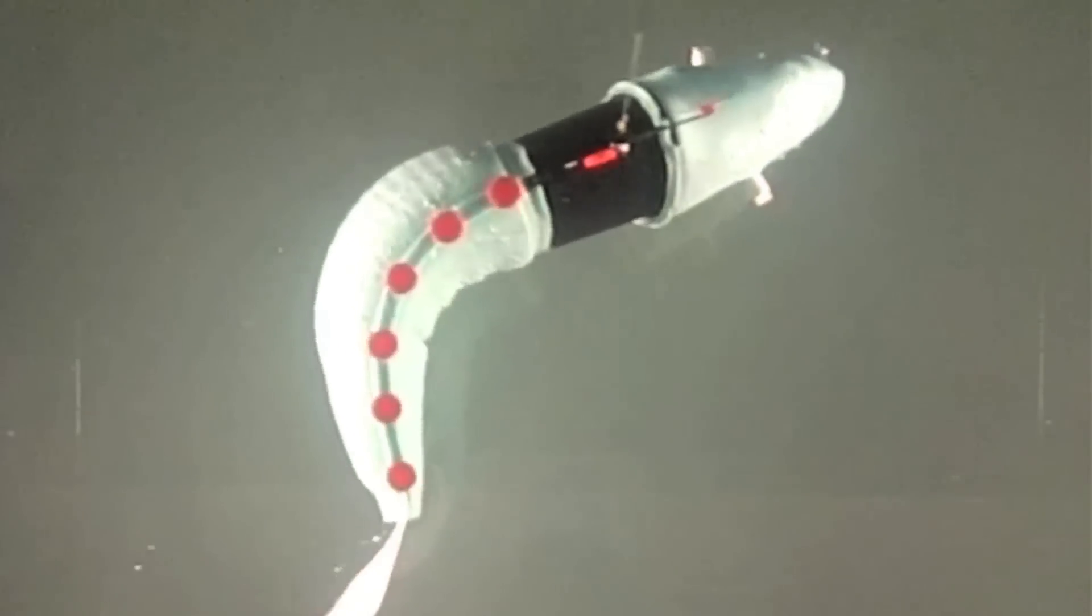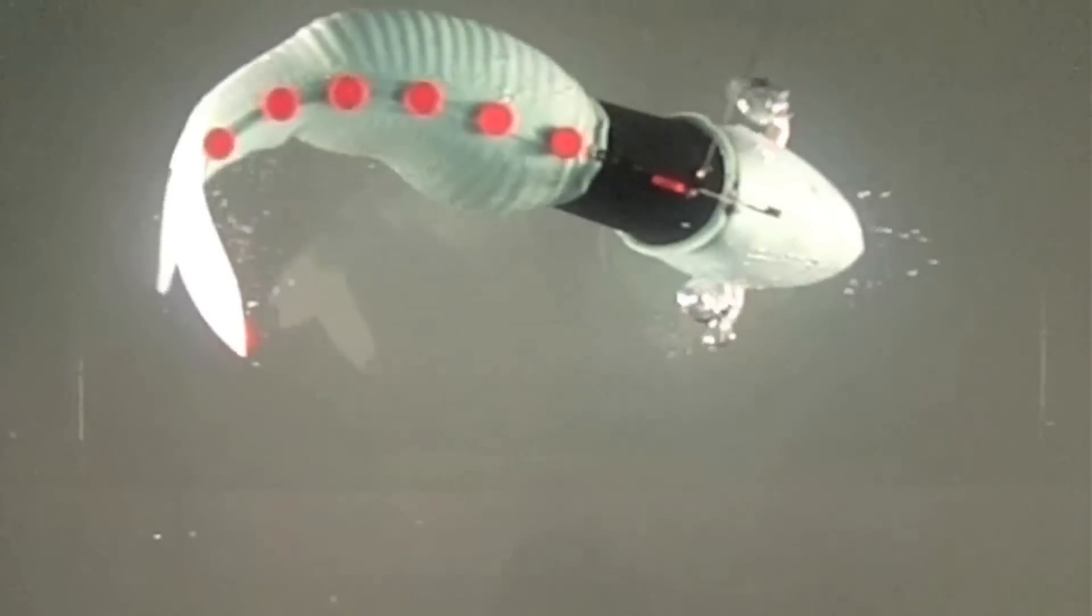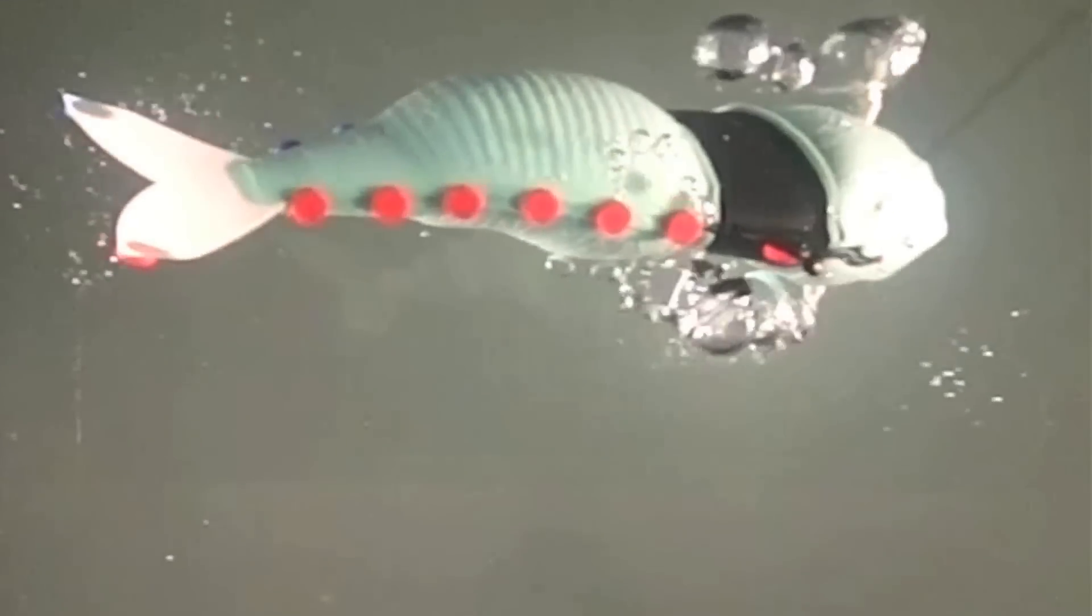Biological fish use the escape maneuver, or the C-turn, to escape prey. And they do these maneuvers very fast, on the order of a hundred milliseconds. Our robot fish is also able to execute the escape maneuver at the same speed, on the order of a hundred milliseconds.